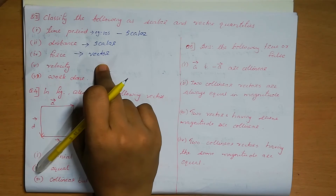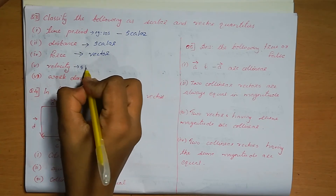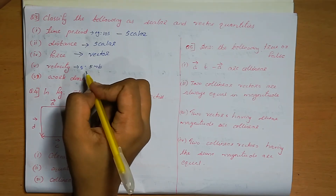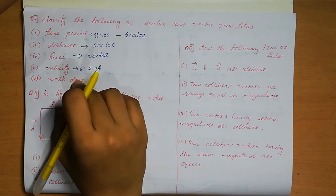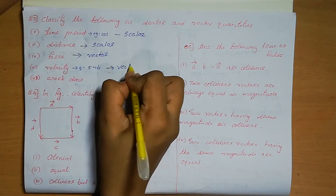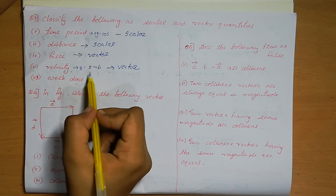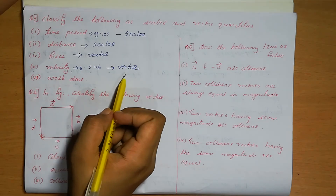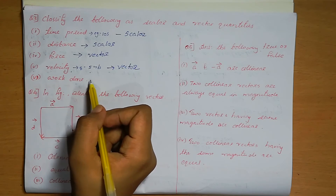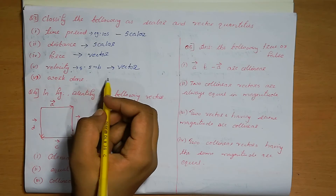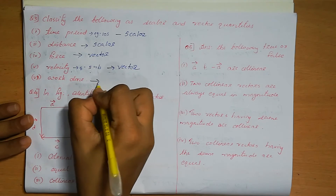Velocity has both magnitude and direction. For example, 5 metres per second in some direction — it has magnitude as 5 and direction is also there. So velocity is a vector quantity. Next, work done. Work done has only magnitude; we say a person has completed this much work in one day, so it has only magnitude and no particular direction. Therefore work done is a scalar quantity.